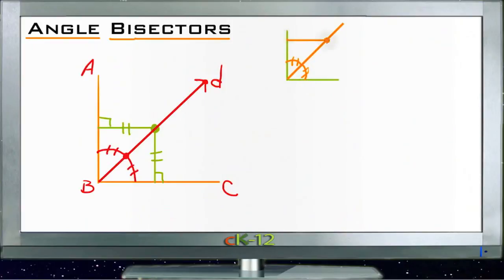That's called the converse of the angle bisector theorem. The angle bisector theorem tells us that the distances from any point to the sides of the angle are the same and that the degree measures are the same on either side. The converse of that theorem tells us if we can prove that information, then we have an angle bisector.